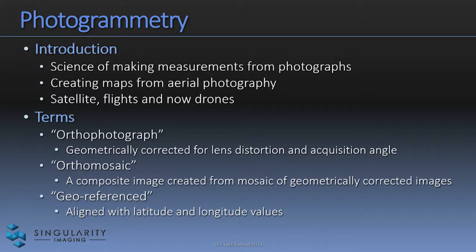Here are some terms you'll hear in this art. An ortho photograph or ortho image is geometrically corrected — corrected for the lens and also because it might be procured from an oblique angle, not perpendicular or nadir. An ortho mosaic is a composite of corrected ortho photographs, and then a geo-referenced ortho mosaic is calibrated and aligned with latitude and longitude. Basically, it's a map.